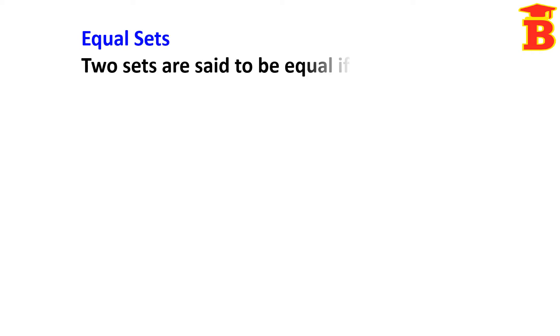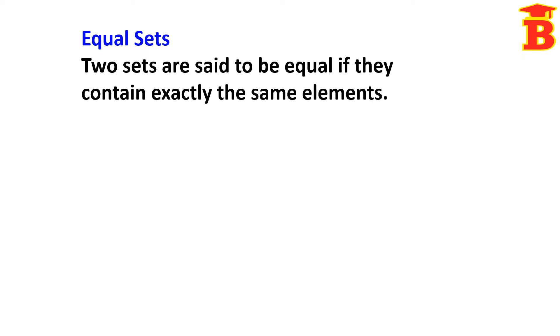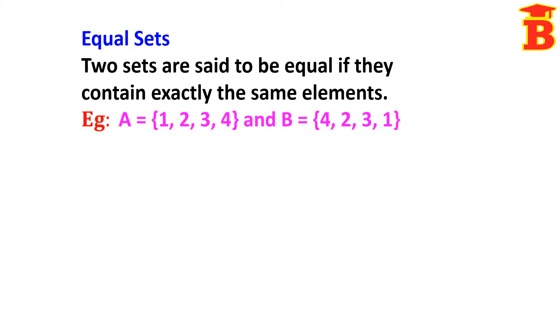Next, equal sets. Two sets are said to be equal if they contain exactly the same elements. For example, let set A = {1, 2, 3, 4} and set B = {1, 2, 3, 4}. The order may be different, but we have the same elements. So the two sets are said to be equal.